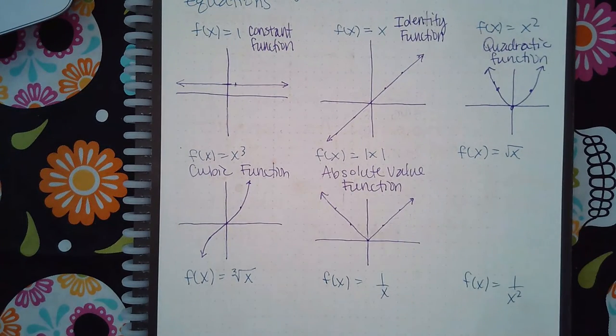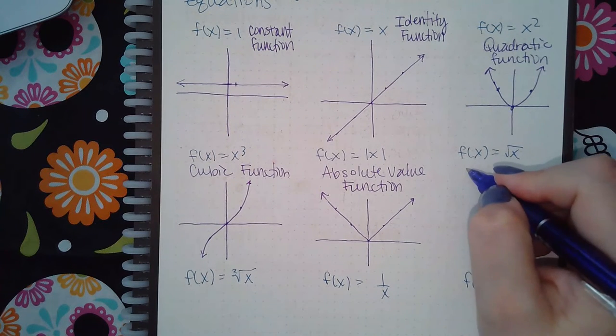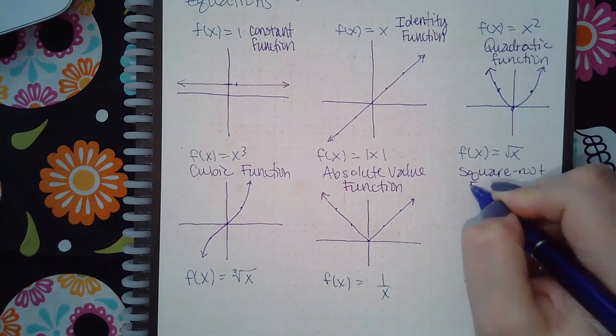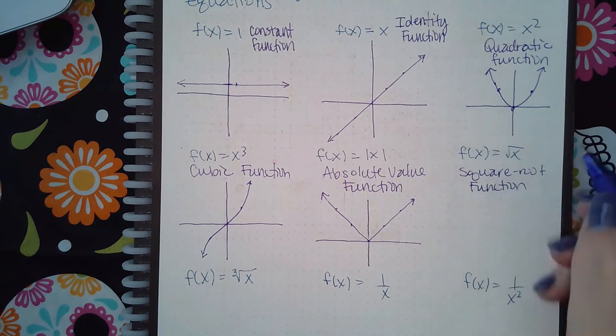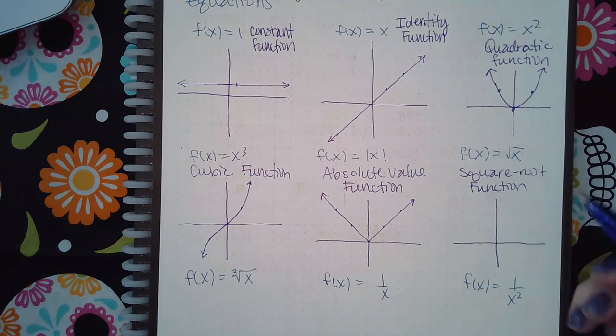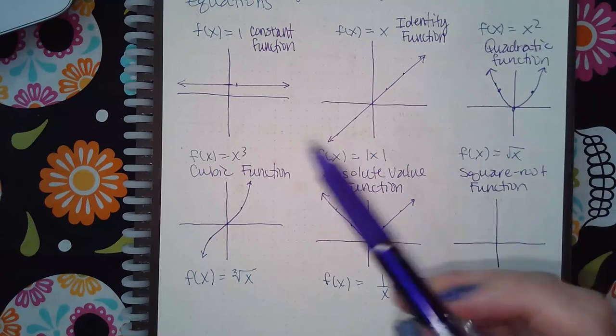Because the absolute value of negative x values are going to be positive values, then we have the square root function.